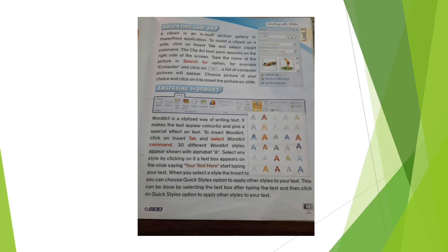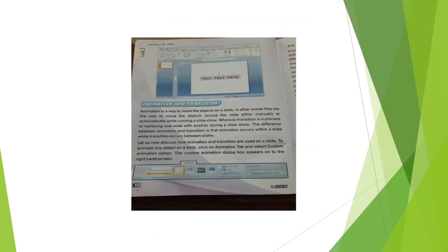Inserting word art: word art is a stylistic way of writing text. It makes the text appear colorful and gives a special effect. There are 30 different word art styles shown with the alphabet A. To insert word art, click on the Insert tab and select the word art command. Select any one style; a text box appears on the slide saying 'your text here' — start typing your text. You can also use the quick styles option to apply other styles.